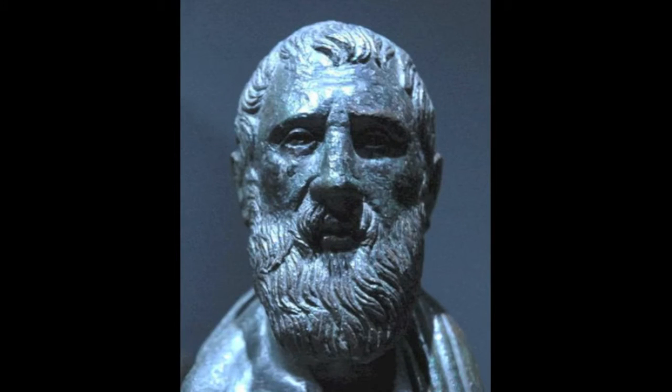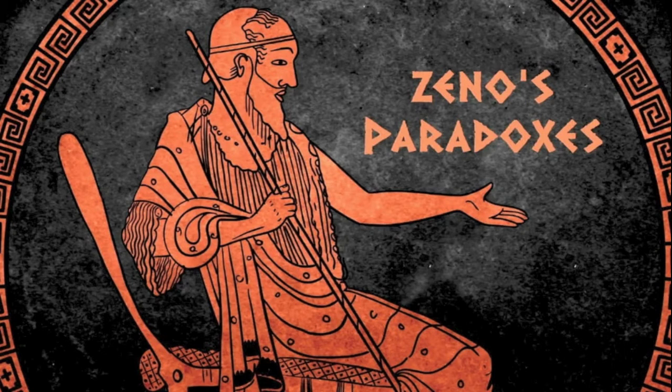This is Zeno of Elea, a Greek philosopher who lived from around 490 to 430 BC. Zeno is famous for a series of paradoxes, a statement with sound reasoning that leads to an unacceptable conclusion. I will be talking about his Achilles Paradox in particular.